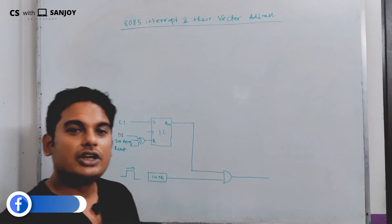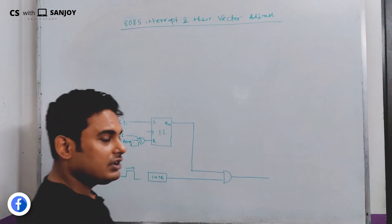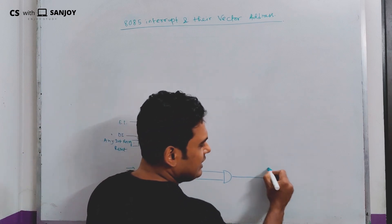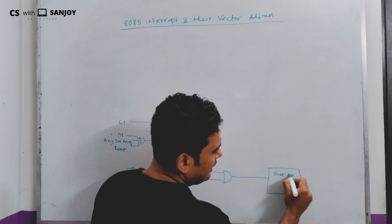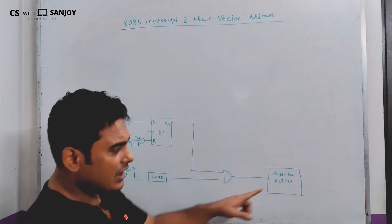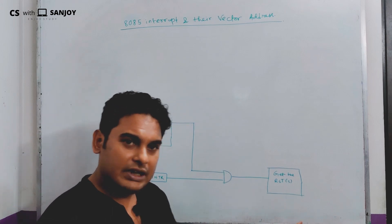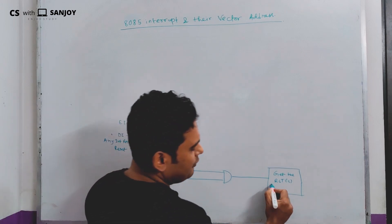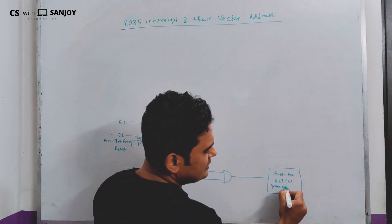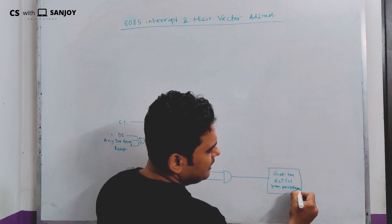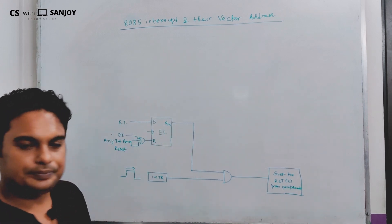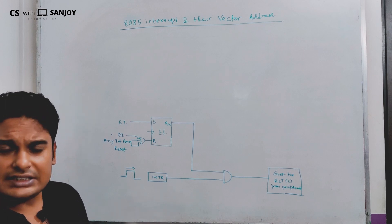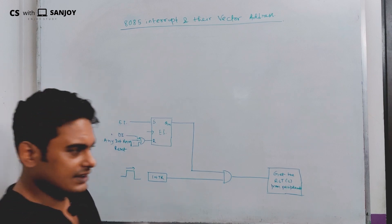So, the software interrupt — we call it the restart interrupt — that is, the RSTs. We get RST 0, RST 1, RST 2 from peripherals. The RSTs are required to signal which RST was activated. RST 0 address is 0000H, RST 1 is 0008H.